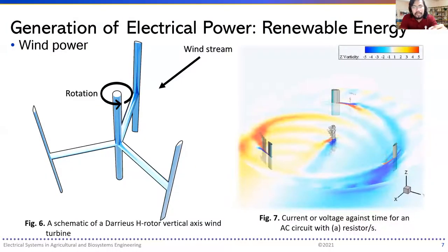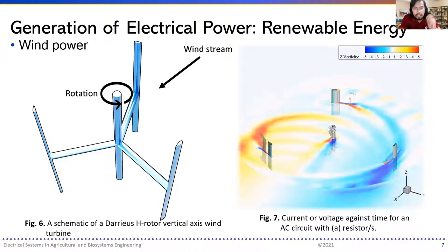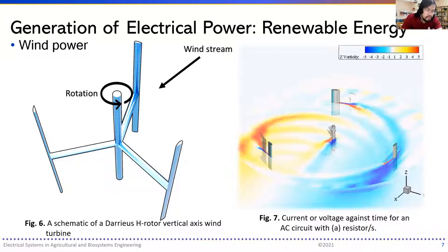The vertical axis wind turbines, or VAWTs, have the axis of the blades perpendicular to the wind stream, as shown in figure six. This is a 3D representation of the Darrieus H-rotor vertical axis wind turbine. There is also the Savonius type, which will be shown later — it is the drag type, while the Darrieus shown here is the lift type.